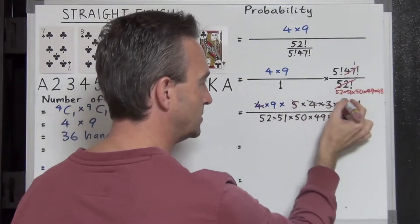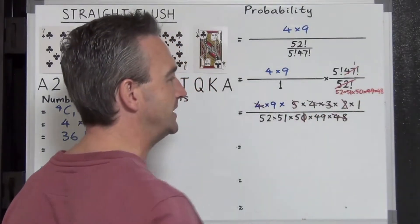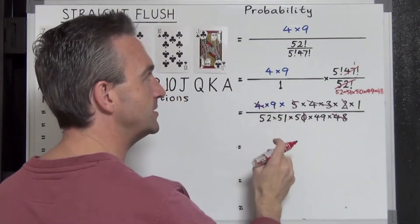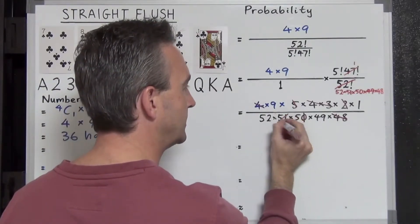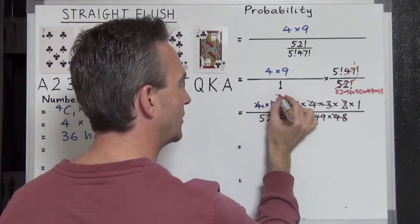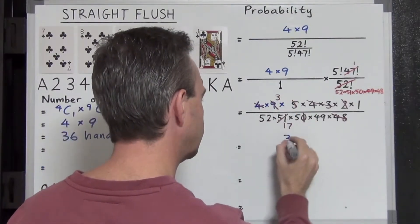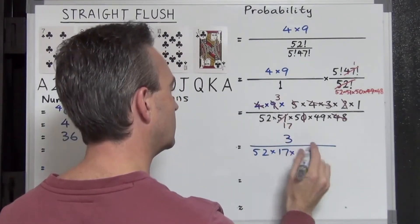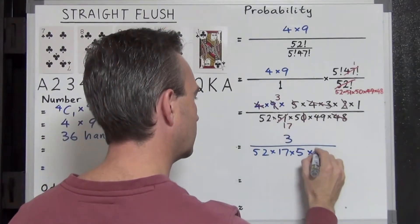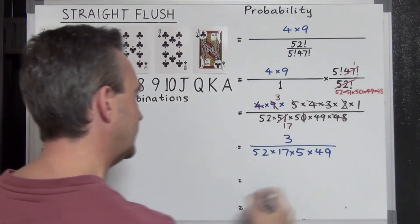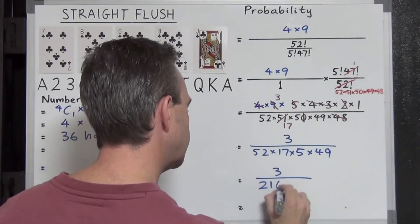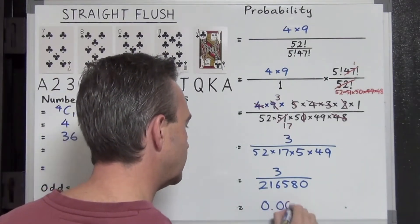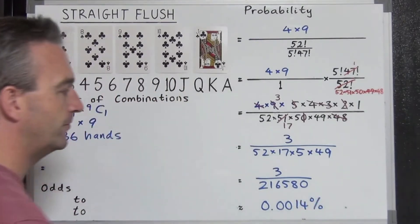Continuing the cancellations: 5 times 2 is 10, cancelling with the zero there, turning the 50 into a 5. Then 17 times 3 is 51, so 3 goes into 51 seventeen times, and 3 goes into 9 three times. This all boils down to 3 on the top and 52 × 17 × 5 × 49 on the bottom, giving us 3 over 216,580. Doing the division and multiplying by 100, we get 0.0014% — very, very, very rare indeed.